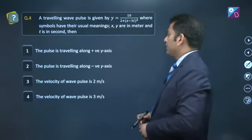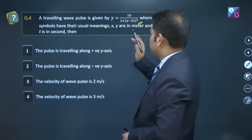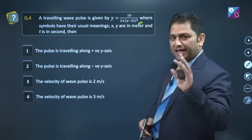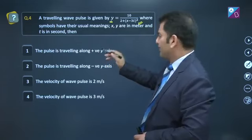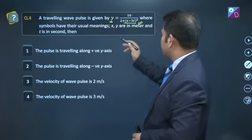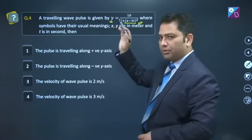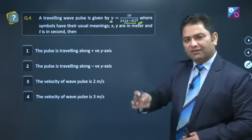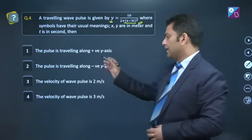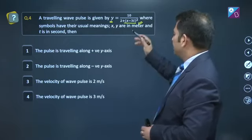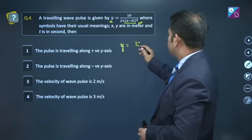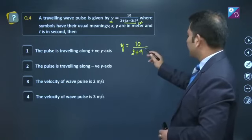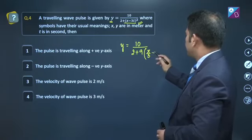Question number 4: A traveling wave pulse is given by y = 10/(2+3(x/3-t)²), where symbols have their usual meaning. The first two options are talking about the direction of the wave. For direction of the wave, we look at this parameter. The wave is traveling in positive x because t has negative sign and x has positive sign. When the signs are opposite, the wave is traveling in positive x.